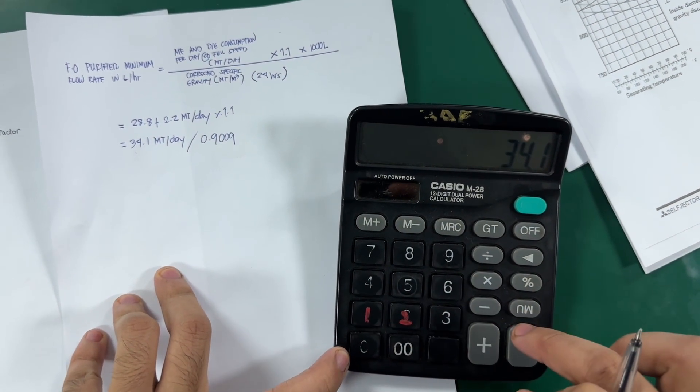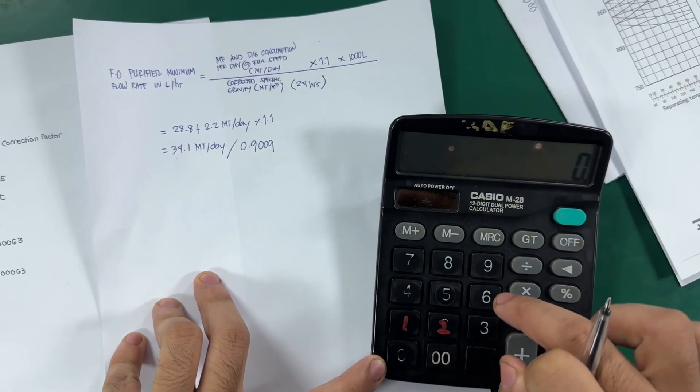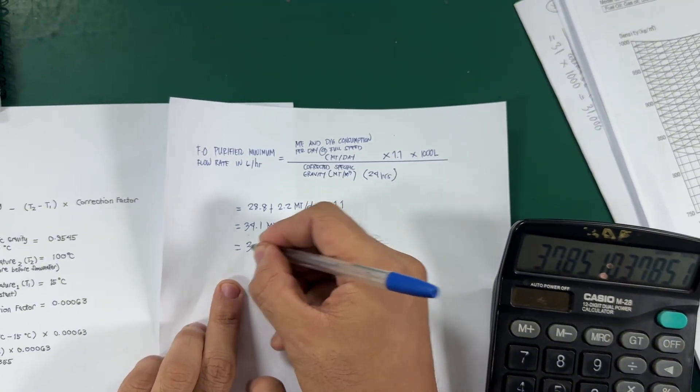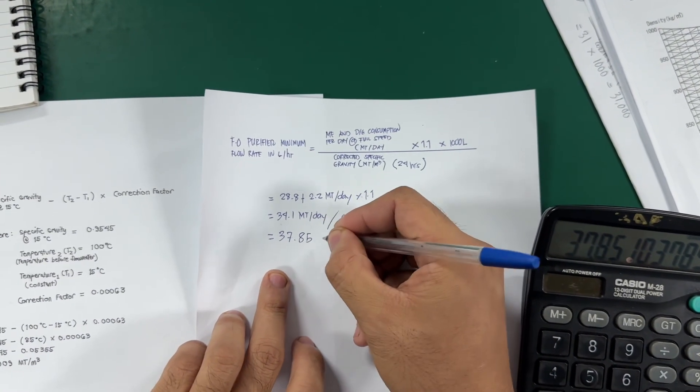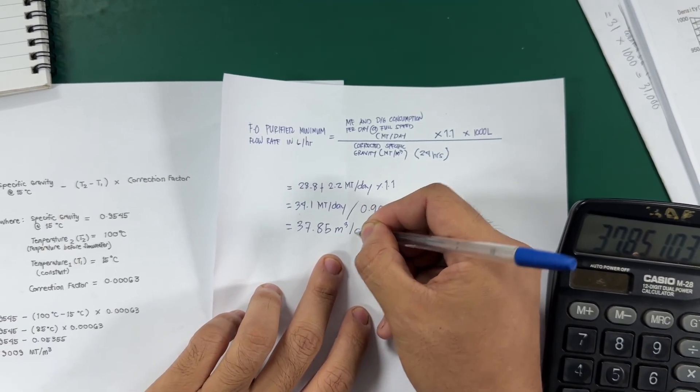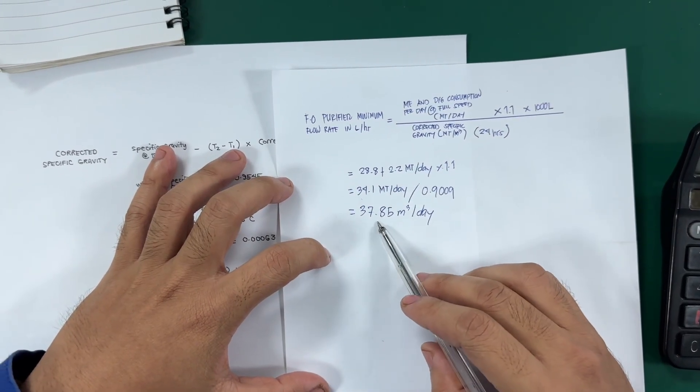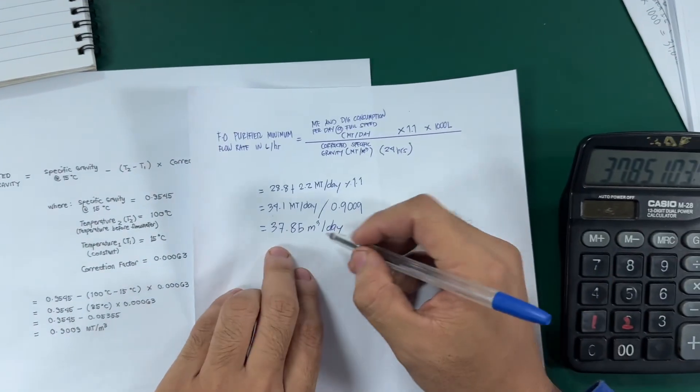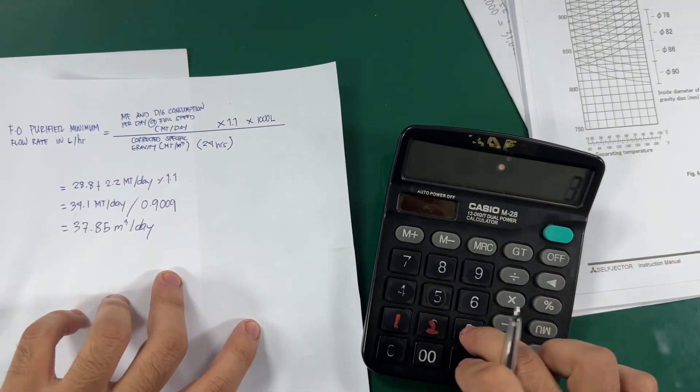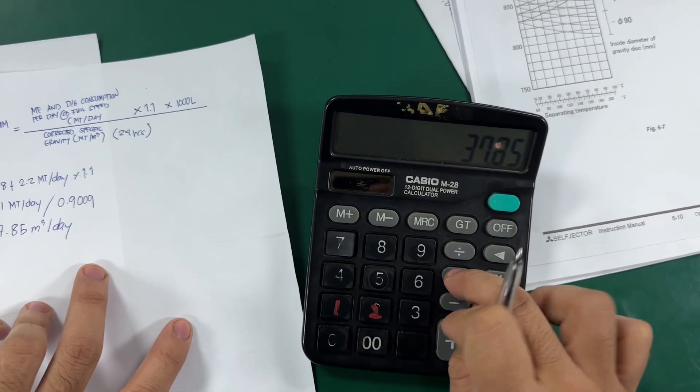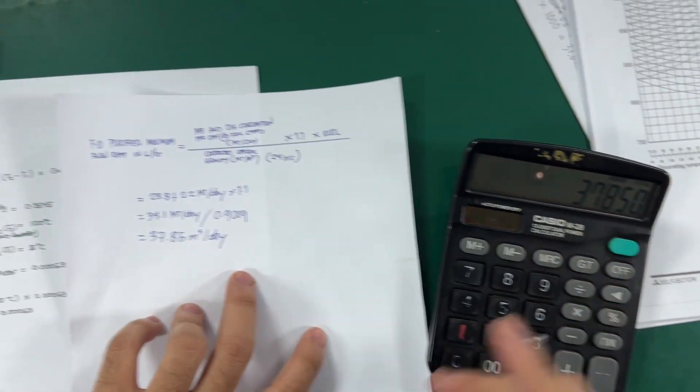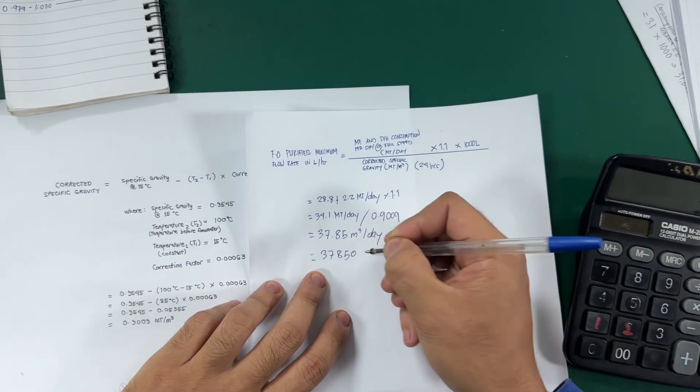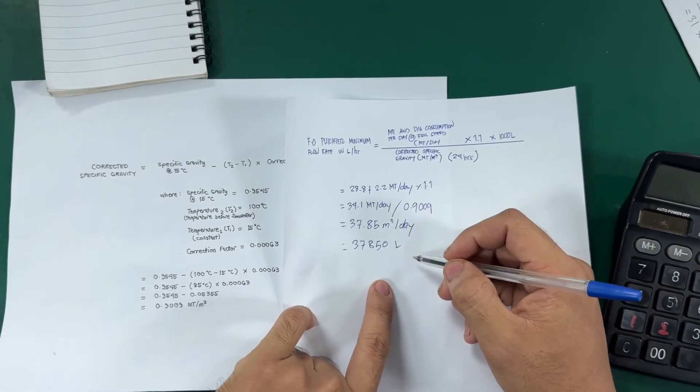34.1 metric tons per day divided by 0.9009 equals 37.85 cubic meters per day. Now we need to convert the 37.85 cubic meter per day to liters by multiplying 1,000 liters. Here, 37.85 times 1,000 equals 37,850 liters per day.